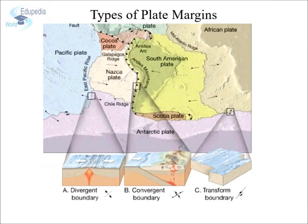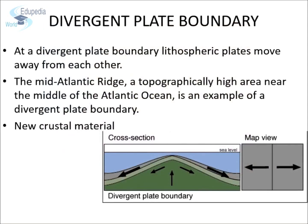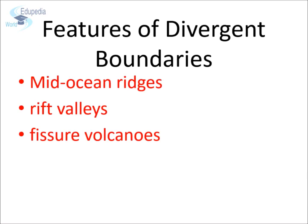There can be three types of plate boundaries: divergent boundary, convergent boundary, and transform boundary. A divergent plate boundary is where two lithospheric plates move away from each other. The mid-Atlantic ridge is an example of a divergent plate boundary. It is also known as a constructive boundary because new crust is formed at this boundary. Features that can be associated with divergent boundaries are mid-oceanic ridges, rift valleys, and fissure volcanoes.